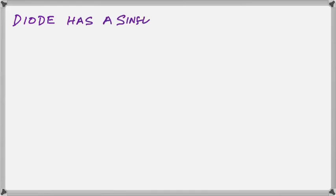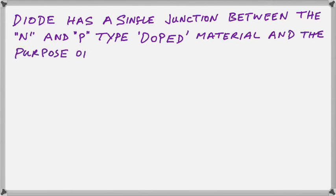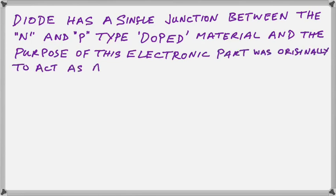Let's deal with the diodes first. A diode has a single junction between the N and P type doped material. You can watch plenty of videos on the internet that will give you all the physical information about how the diodes are structured and produced and all the rest of it. But the purpose of the electronic part is what we are concerned with in this video. And it was originally designed to act as a one-way only conductor. That was what the first diodes did.